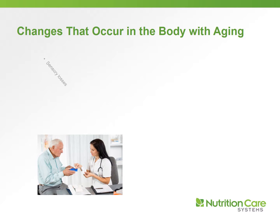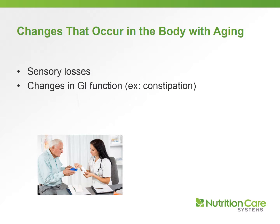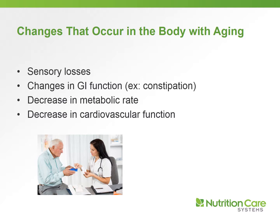Some of the changes that can occur in the body with aging include sensory losses, changes in GI function — which most commonly is constipation — a decrease in metabolic rate, and a decrease in cardiovascular function.